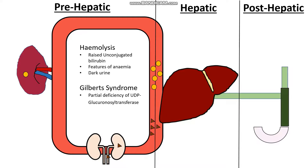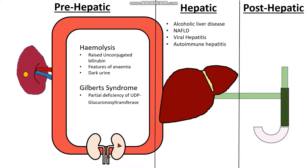In terms of hepatic causes, we have direct insult to the liver or the hepatocytes themselves. Causes of hepatic jaundice include things like alcoholic liver disease, non-alcoholic fatty liver disease, viral hepatitis, autoimmune hepatitis, and drug-induced hepatitis. All of these attack the hepatocytes themselves, which can then die and release all of their conjugated bilirubin into our bloodstream.